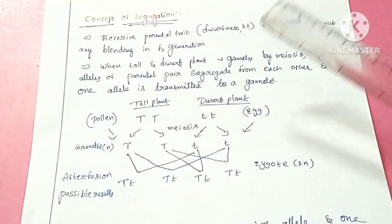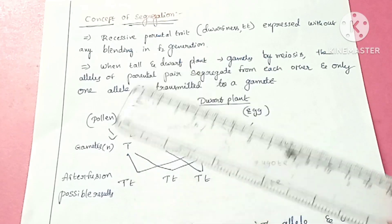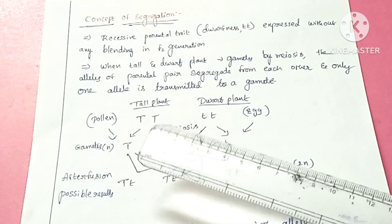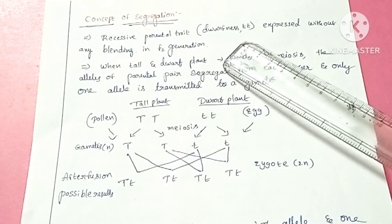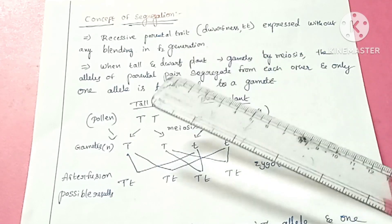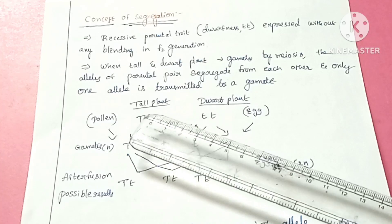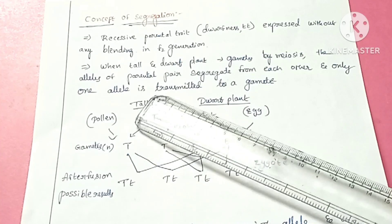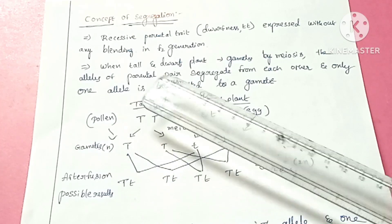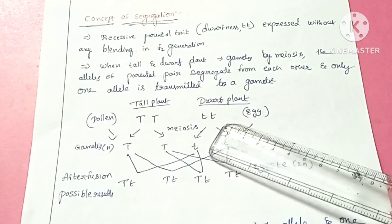The recessive parental trait, dwarfness — small d small d — is expressed without blending in the F2 generation. Blending means mixing of characters. The dwarf plants carry the small d small d genotype.